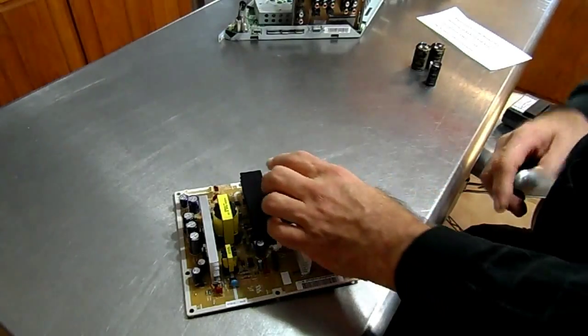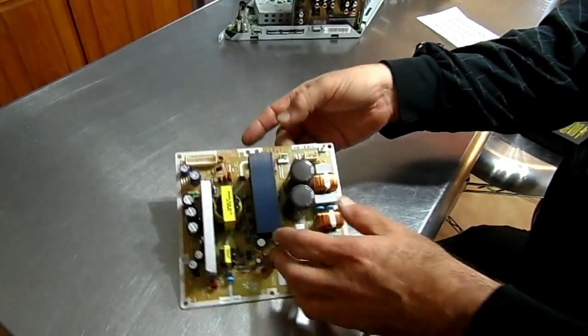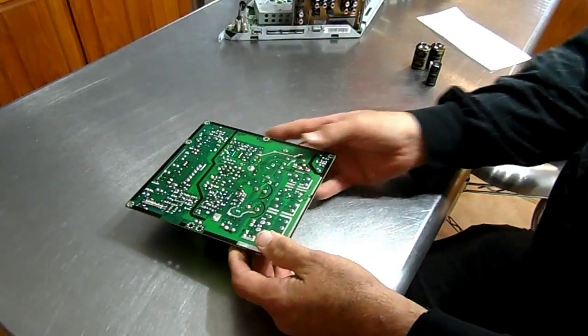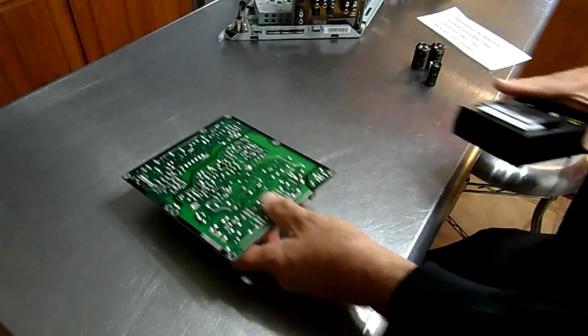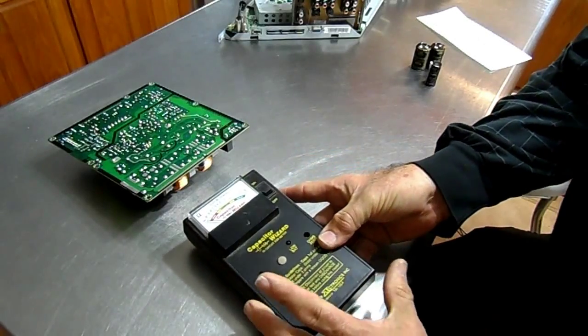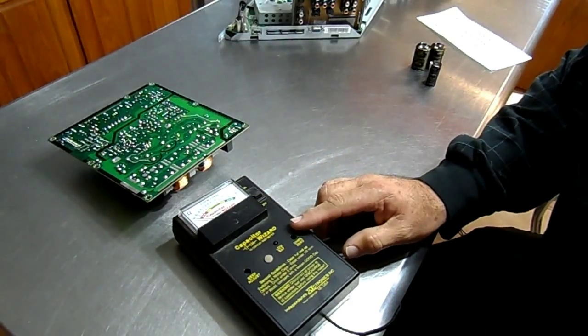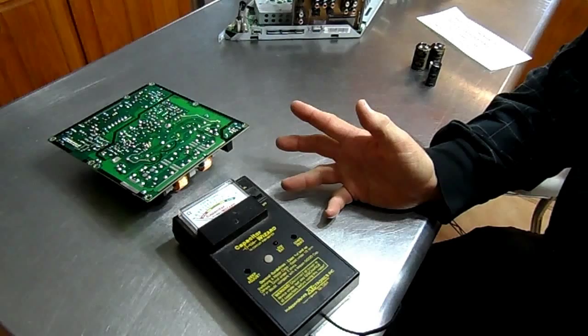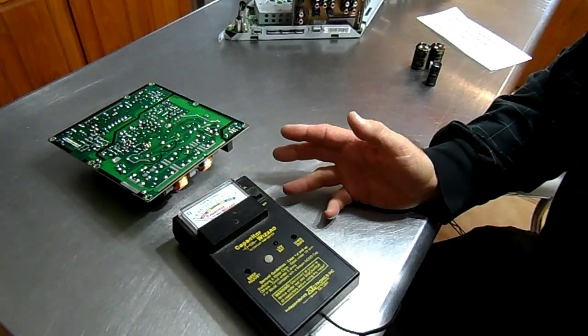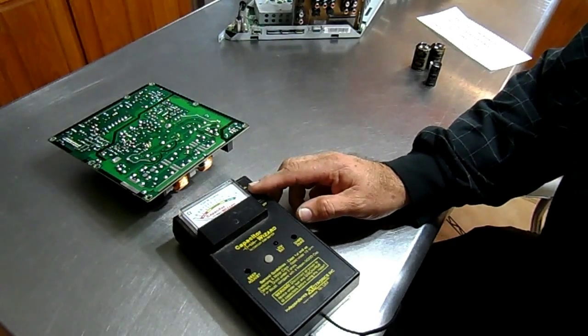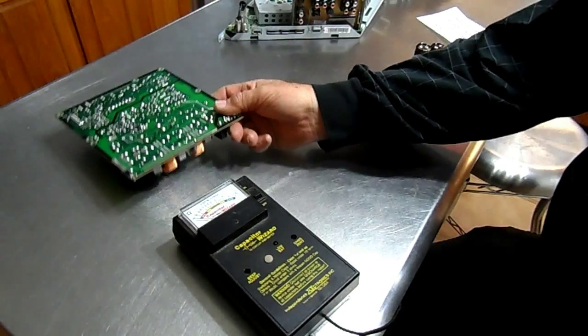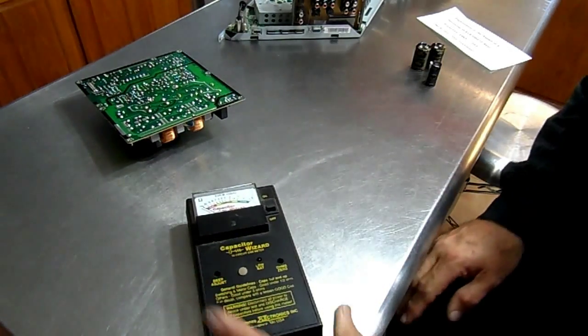I've already repaired this unit. I'm just doing this to show you guys. I'm going to use this device here which is called an ESR tester. They're available on eBay for between 35 and 75 dollars and they're well worth the money because they'll identify absolutely a good or a bad capacitor.